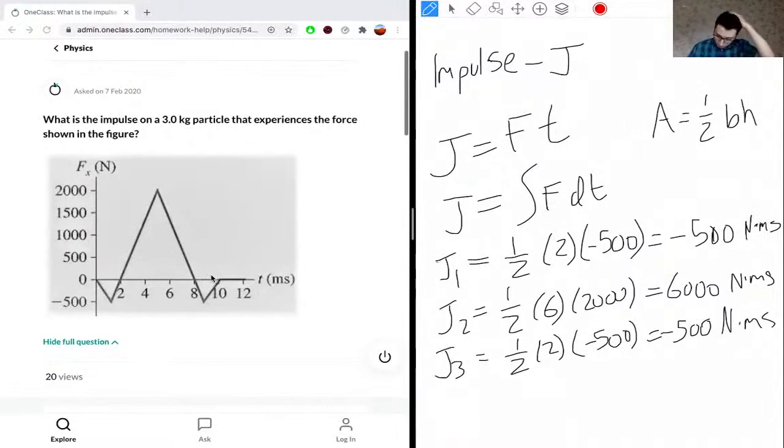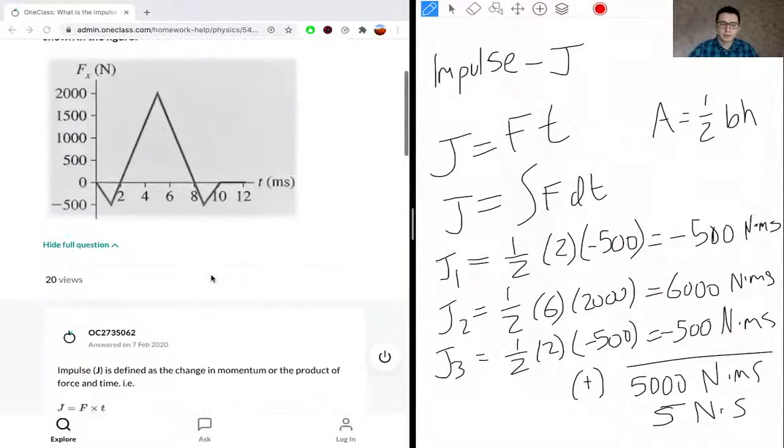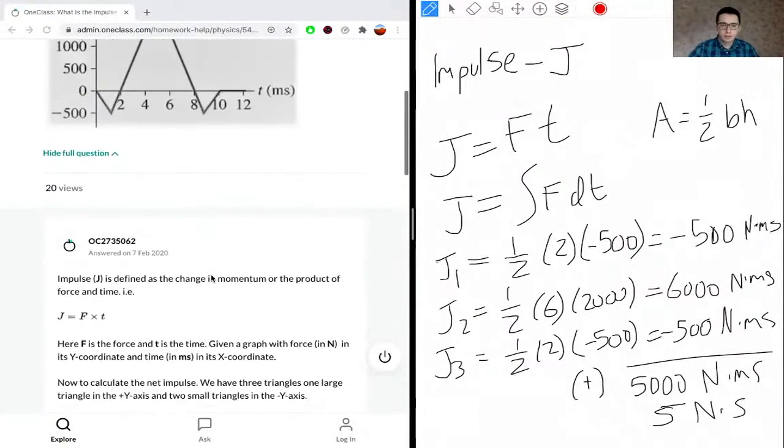All we have to do is sum these up. J1 plus J2 plus J3 gives us 5000 Newton-milliseconds. We can convert this to Newton-seconds by dividing by 1000, since there are 1000 milliseconds in 1 second.